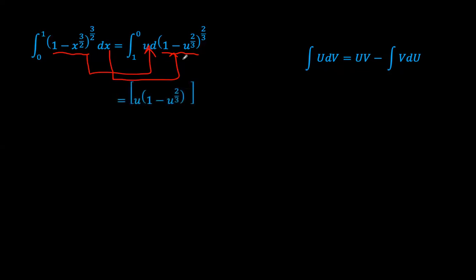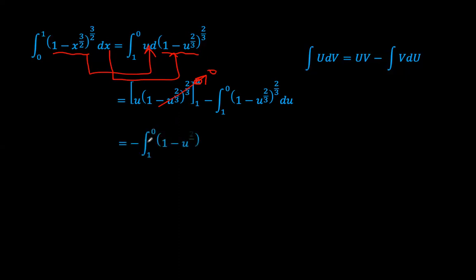Using integration by parts — the product of u and dv gives uv minus the integral of v du — we get uv equals u times 1 minus u to the power 2 over 3, to the power 2 over 3, evaluated with the limits from 1 to 0. When u equals 0, this term goes to 0 because u is 0. When u equals 1, we get 1 minus 1 which is 0. So this entire boundary term is 0. We are left with negative the integral from u equals 1 to 0 of 1 minus u to the power 2 over 3, to the power 2 over 3. Because of the negative sign, we can flip the limits.